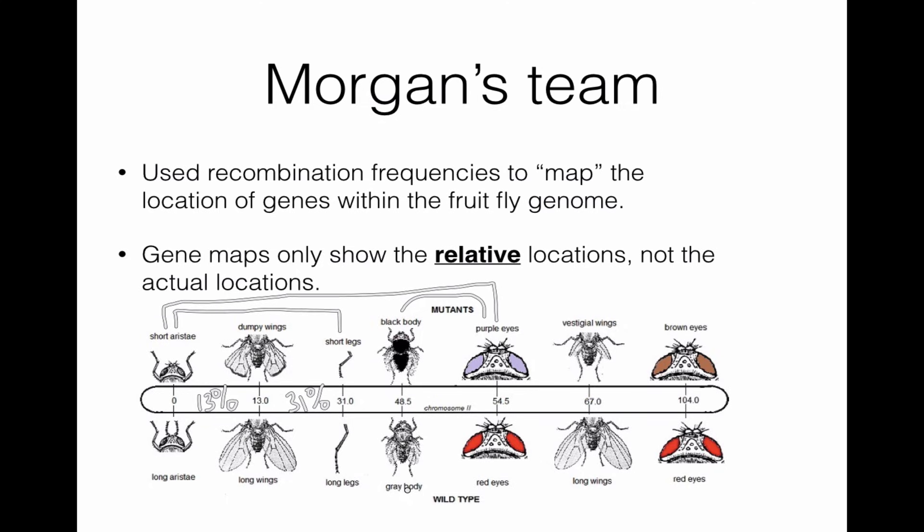So, for example, between the gray body, the gene controlling the body color, and the gene controlling purple versus red eyes, we have a distance here that is equal to 54.5 minus 48.5. So that would be the predicted percent recombination between these two. So I'm hoping this helps you make sense of what's meant by recombination frequencies and how Morgan's team figured out how to map the location of genes without actually being able to image them or to decode them, like we're going to learn about in our next unit of study on the molecular basis of inheritance. Thanks for listening.